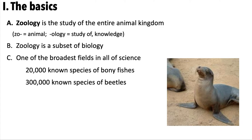Zoology is a subset of biology and one of the broadest fields in all of science. For example, there are 20,000 known species of bony fishes alone, and 300,000 known species of beetles. We're constantly discovering more animals, and by examining DNA, we're realizing there are even more species than we thought — animals that look similar but are genetically distinct.